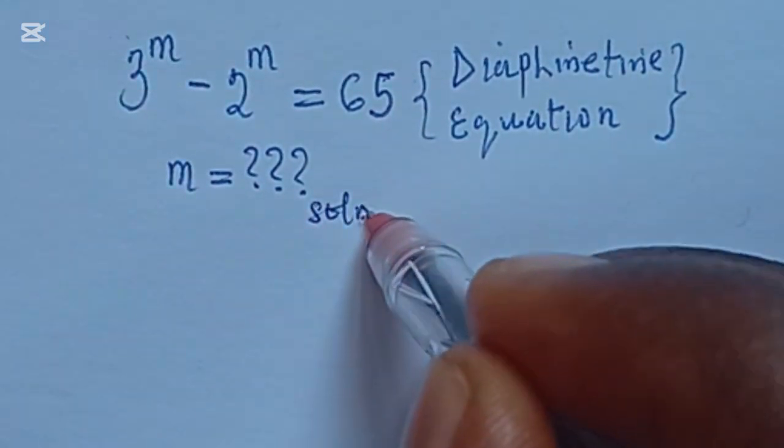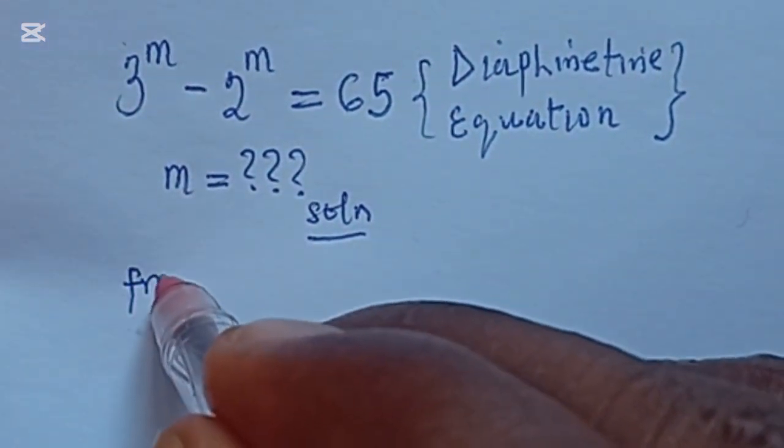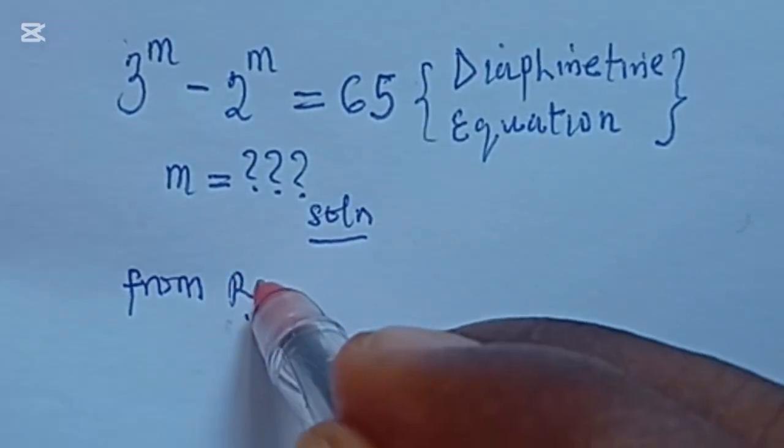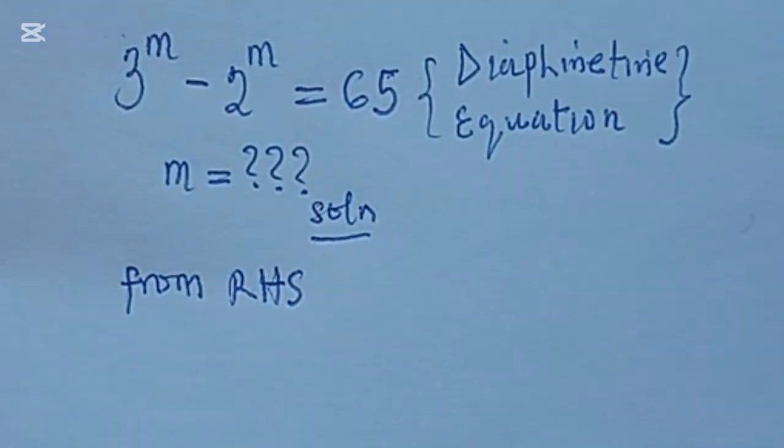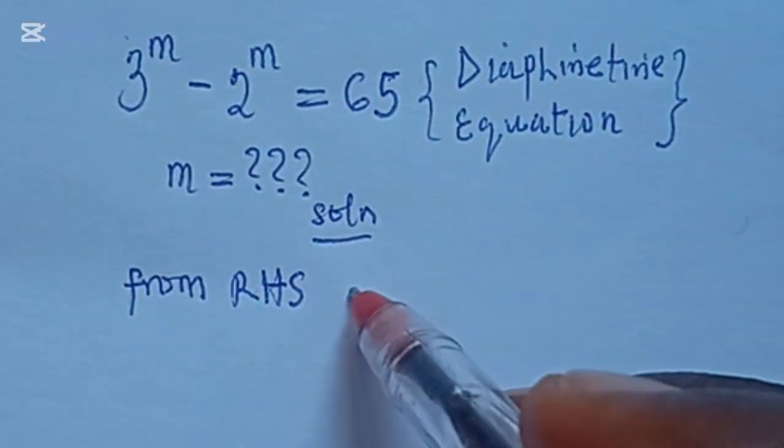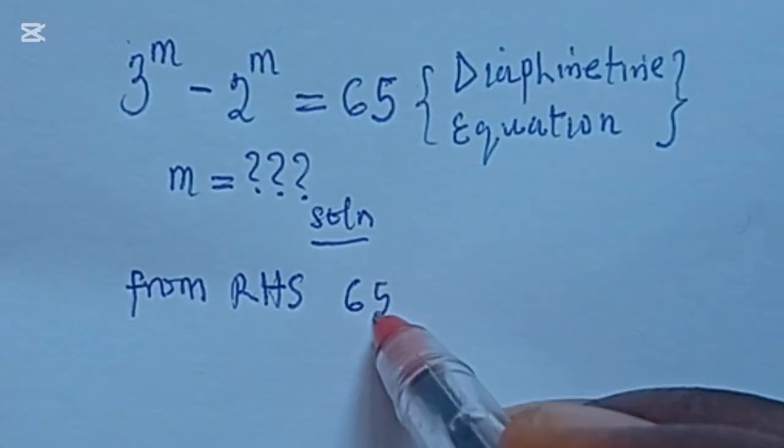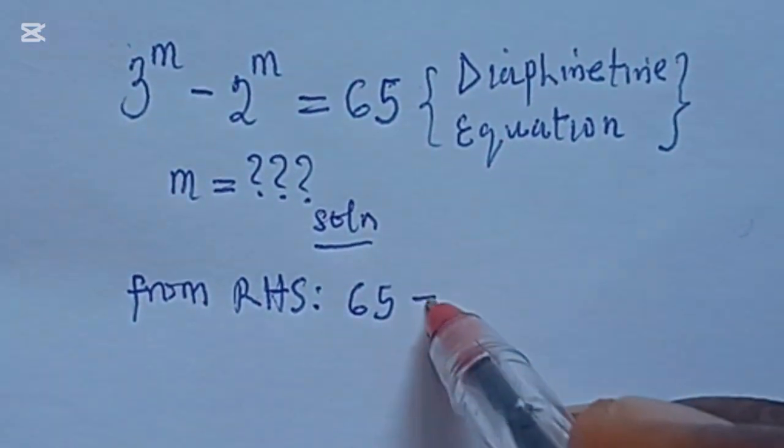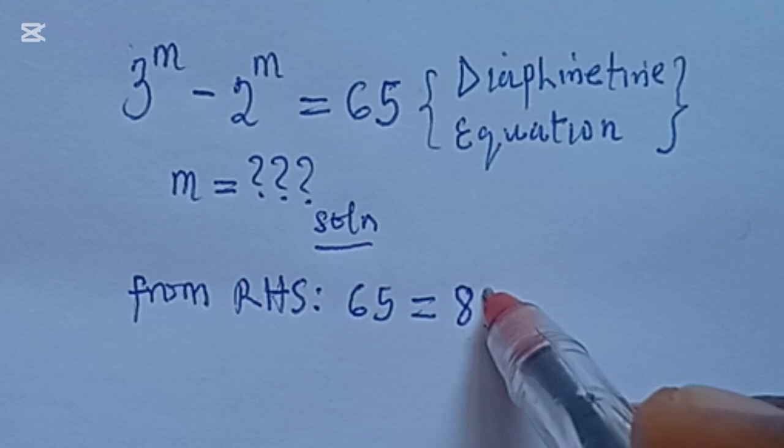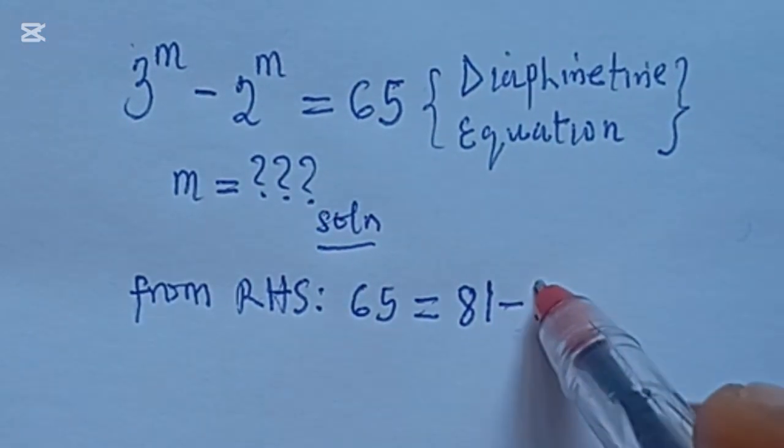Let's start from the right-hand side. So from the right-hand side of this equation, we can see that 65 can be written as 81 minus 16.